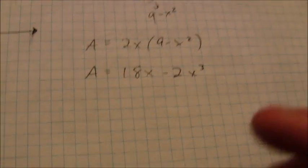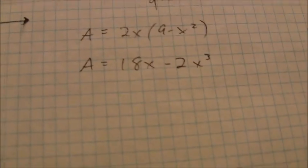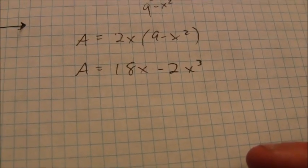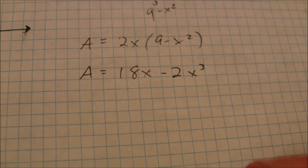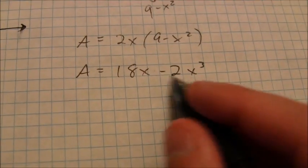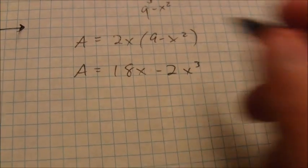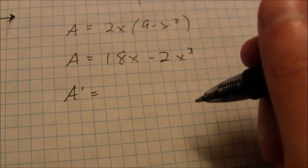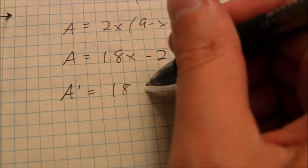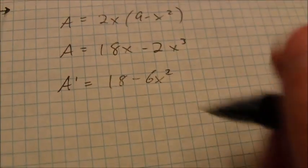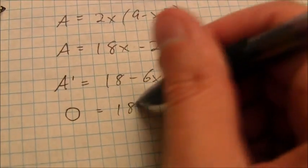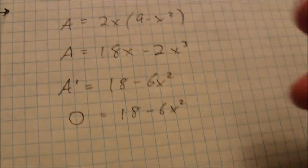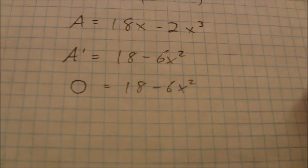The maximum value is going to take place when the derivative is equal to 0. If you graph this, that would be where the vertex is. This is an upside down, never mind, it's not a parabola. But I can find a local minimum or maximum. And so that's going to be 18 minus 6x squared. When that's equal to 0, my graph will have a local minimum or maximum.